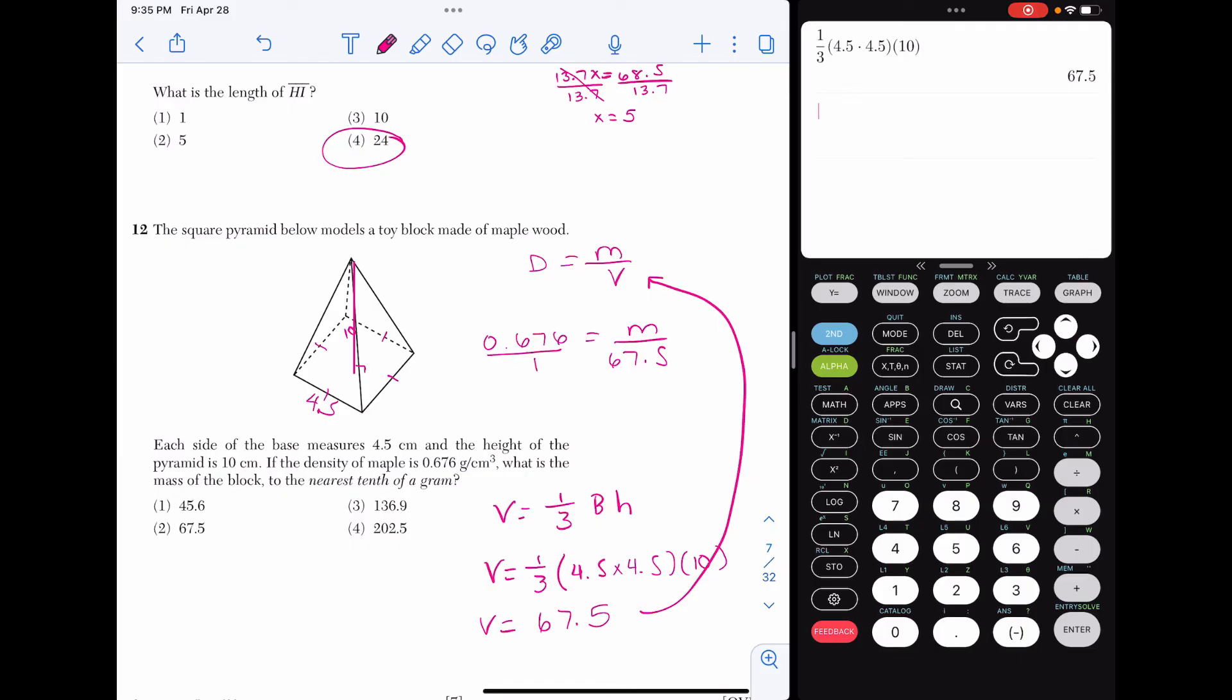And now let's take that and bring that into our density formula. So we're plugging in the density is 0.676. The mass is unknown. That's what we're looking for. And the volume is 67.5. Let's put that density over 1 so that we could cross-multiply. And when I do that, I get 45.63, but to the nearest 10th, 45.6 or choice 1.